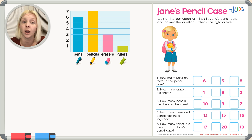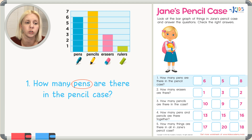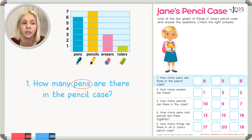Let's look at the questions and answer them. Number one says: how many pens are there in the pencil case? I'm going to circle this so I know exactly what I'm looking for. We go to our graph, find pens — that's this first one — and count how many there are. The bar goes all the way up: one, two, three, four, five, six. So there are six pens. I'll put a check next to the number six.